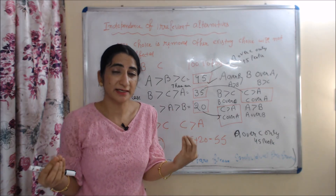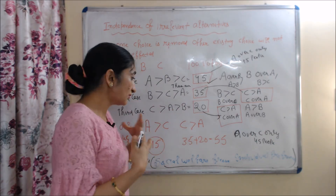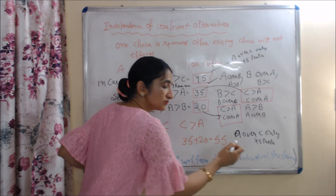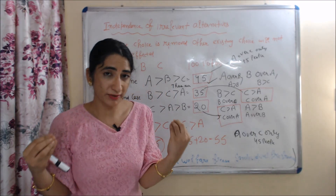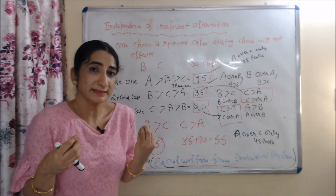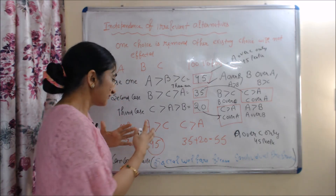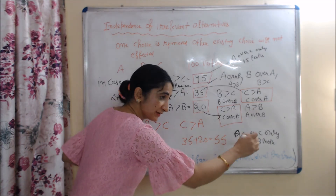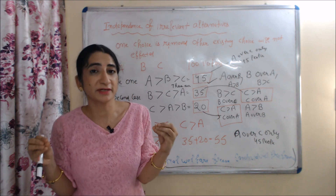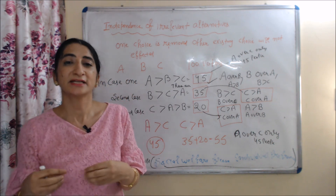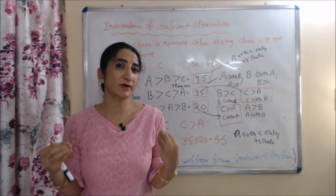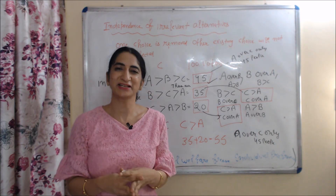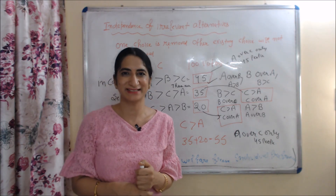If this condition is violated, we cannot construct social welfare from individual preferences, because according to Arrow, all five conditions must be satisfied to construct valid social welfare. This is all about the Arrow Impossibility Theorem. Thank you so much for watching this video. Bye, take care.